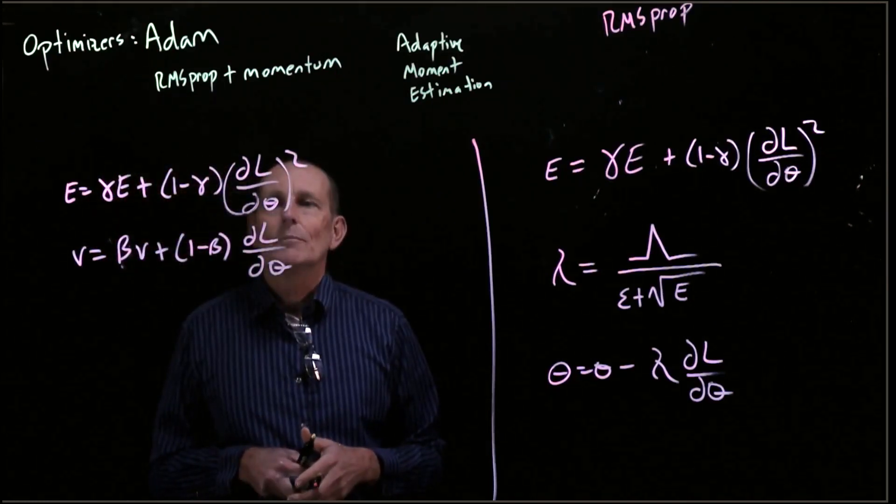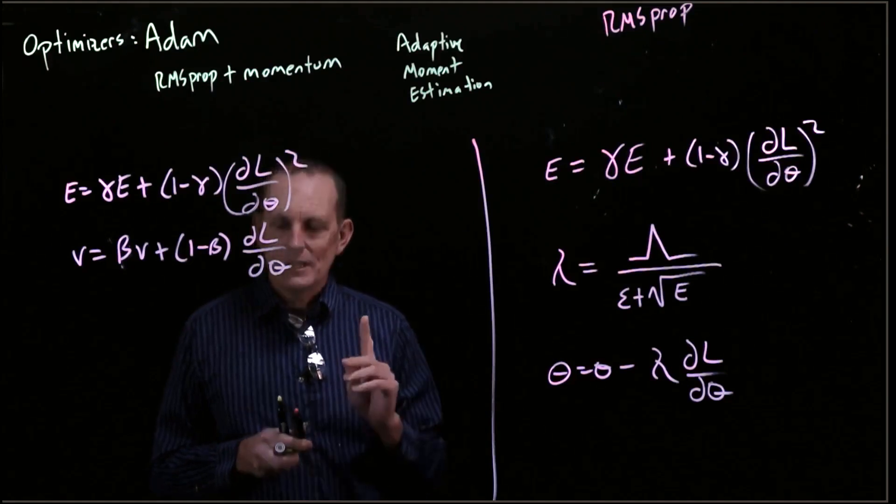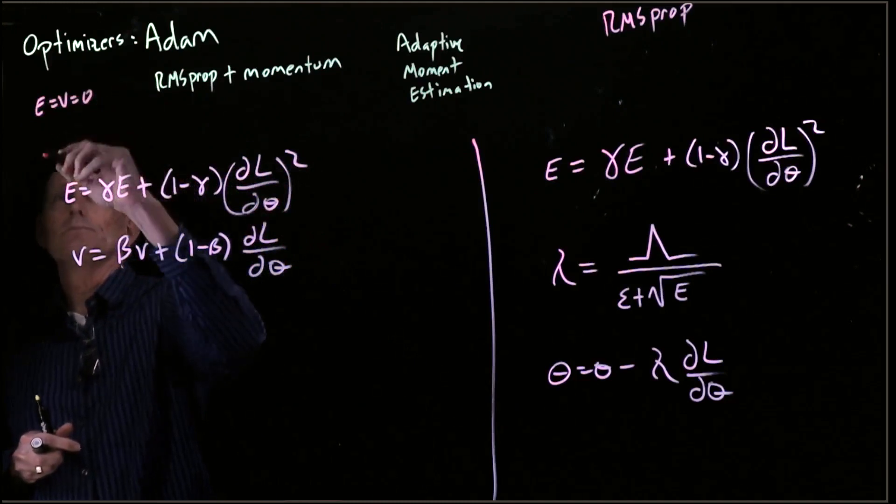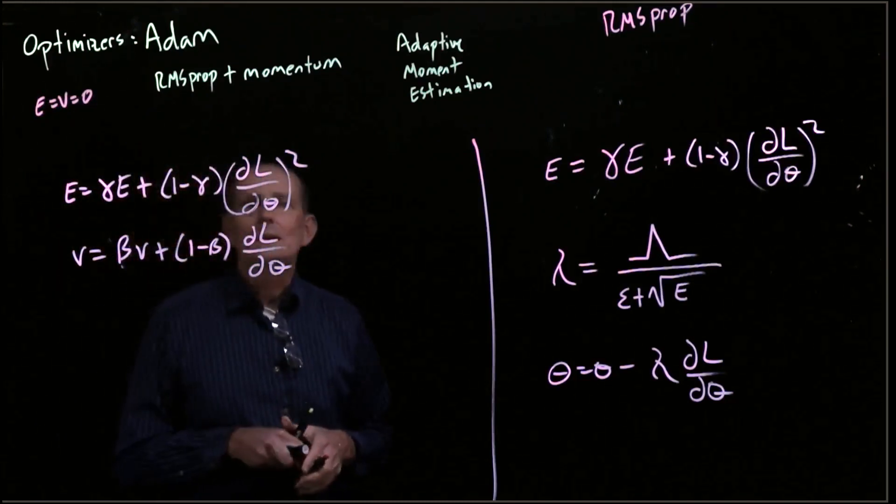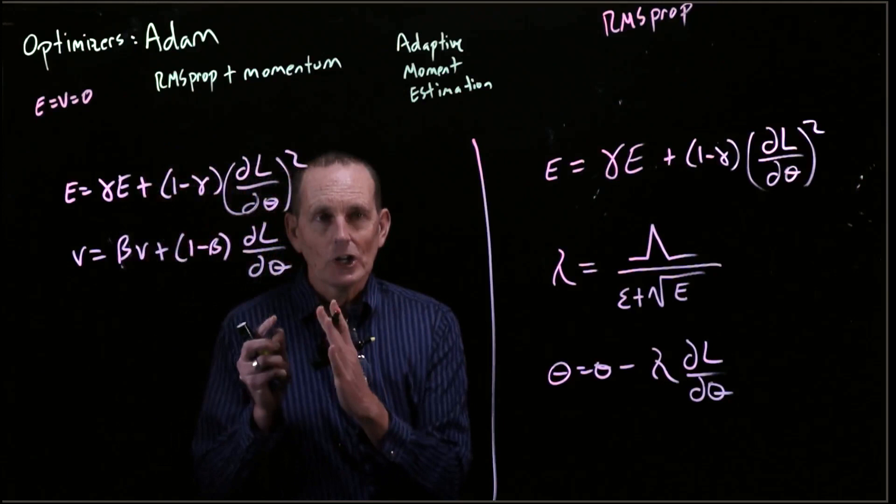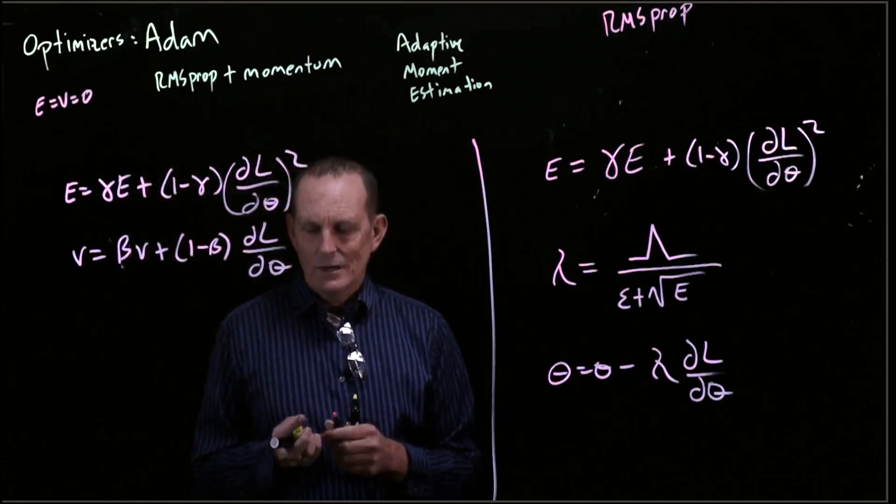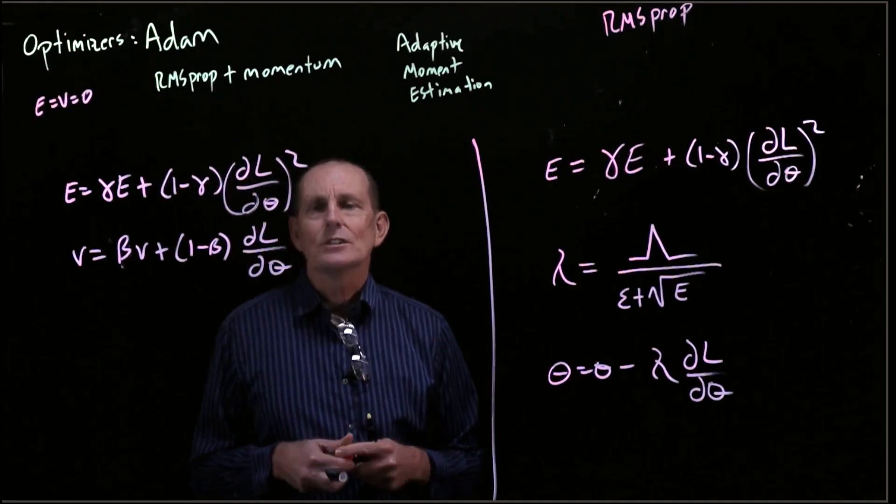We're going to make a slight modification to E and V for this reason. We initialize E equals V equals zero to begin with. The problem is, as we are early in our estimations, we are off in our true estimation.